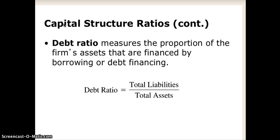Capital structure ratios include the debt ratio, which basically states what percentage of total assets are represented by total liabilities. For example, if total liabilities are $100 and total assets are $200, the debt ratio is 0.5. If total liabilities and total assets are both $100, the debt ratio is 1. A higher debt ratio is not good — it means an increasing amount of your total liabilities as a percentage of assets, which can obviously lead to many different issues.